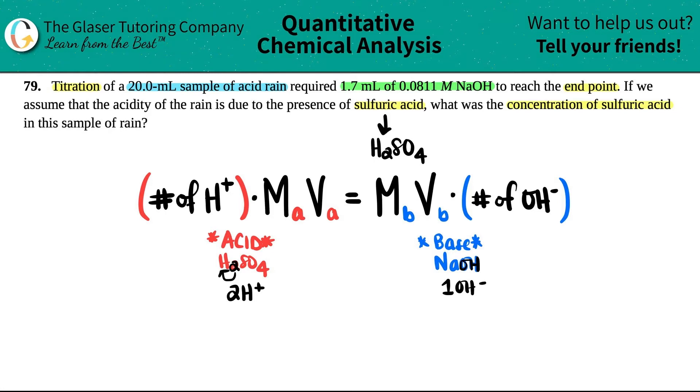Let's write out all the other numbers. It says titration of a 20 mil sample of the acid rain - 20 mils is a volume of the acid. This required 1.7 mils of 0.0811 molarity NaOH. So here's the volume of the base and here's the molarity of the base. The molarity is 0.0811 and the volume was 1.7.